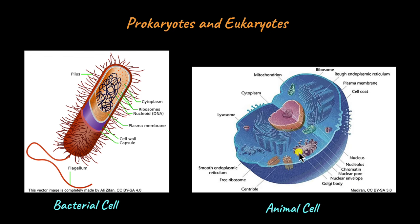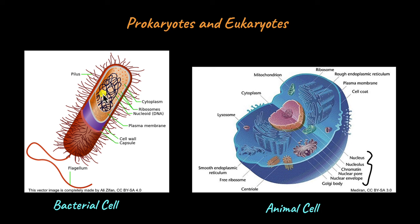Now take a look at the animal cell, which is an example of a eukaryotic cell. You'd see that the DNA in the form of chromatin is located within the nucleus. The region of the nucleus that contains the DNA is known as the nucleolus. This is the main difference between prokaryotes and eukaryotes: in eukaryotes, the genetic material is enclosed within a membrane-bound nucleus, whereas in prokaryotes, the DNA is not enclosed within a nucleus — in fact, prokaryotes lack the nucleus entirely. In eukaryotes, the nucleus is bound by a membrane called the nuclear envelope or nuclear membrane.